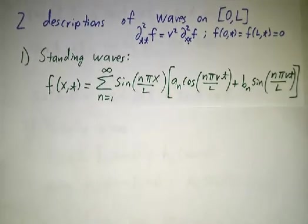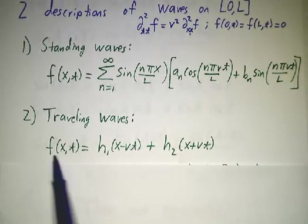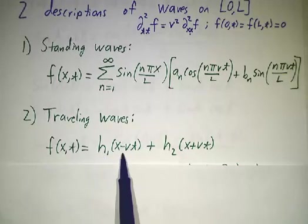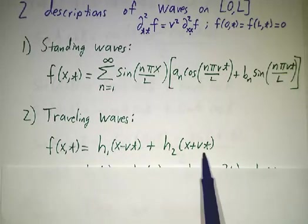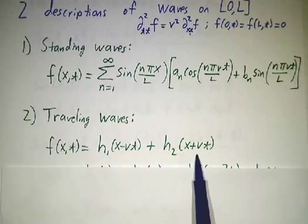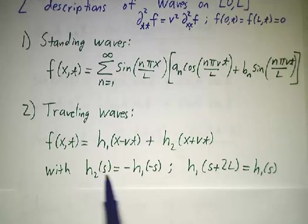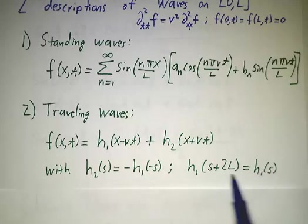But we also learned to do things with traveling waves. We saw that we could write our solution as a function of x minus vt plus another function of x plus vt. This is a forward traveling wave. This is a backwards traveling wave. And these functions are related, that h2 of s is minus h1 of minus s and both functions are periodic with period 2L.